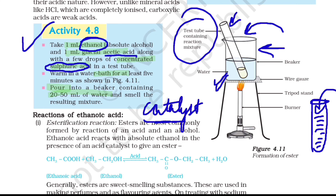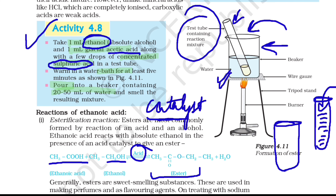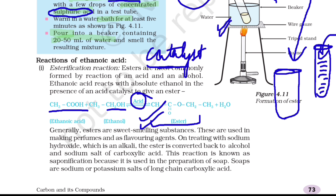What do we get from this reaction? Ethanoic acid and ethanol, when they react in the presence of a catalyst, an ester is formed. We will take another beaker of water and add this solution into it. When we smell it, we will find it is very sweet — a sweet-smelling substance, or a perfume-type smell. This is because of the formation of an ester.